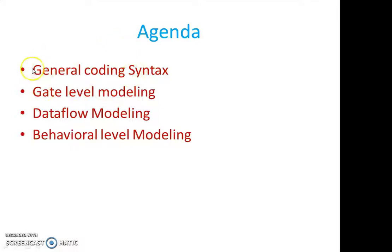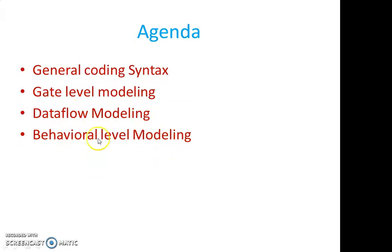First, we are going to see about a general coding syntax for Verilog coding, then gate level, then data flow modeling — what are the major things we are going to do. Then in behavioral description, how we are going to write it. At the last, we are going to do a little bit of comparison: how we can distinguish whether the code is in gate level modeling or in data flow modeling.